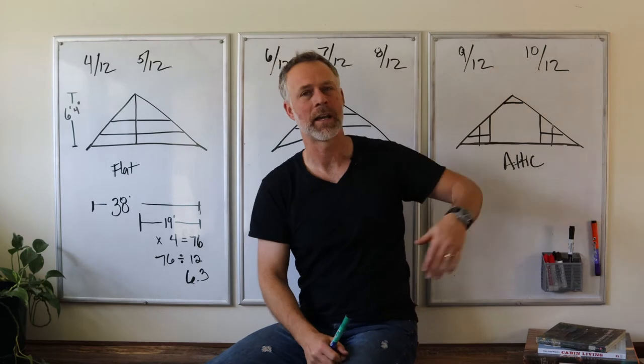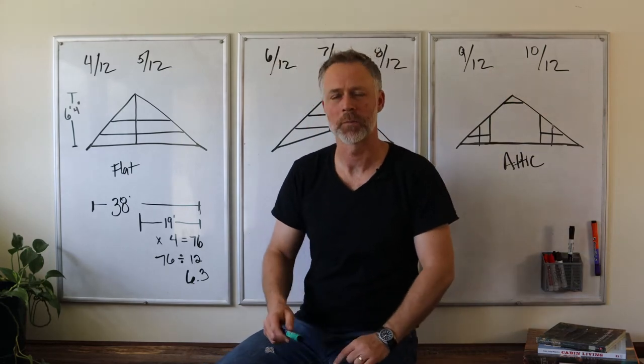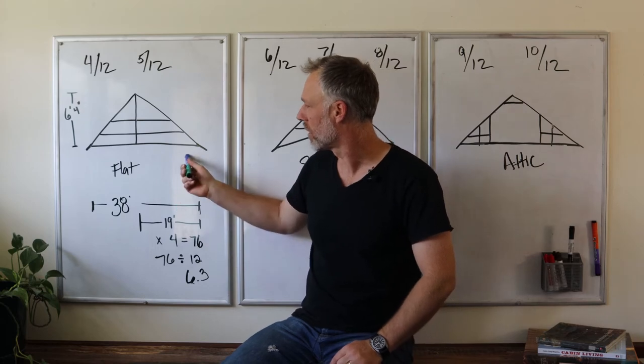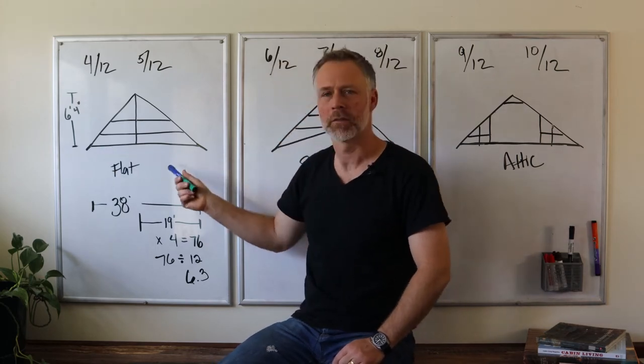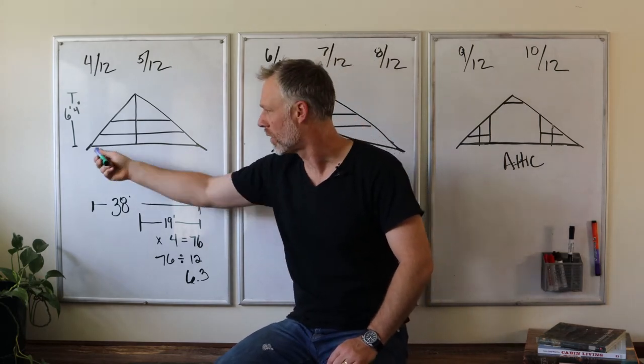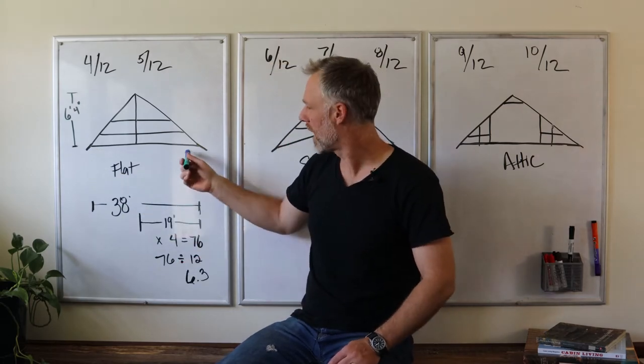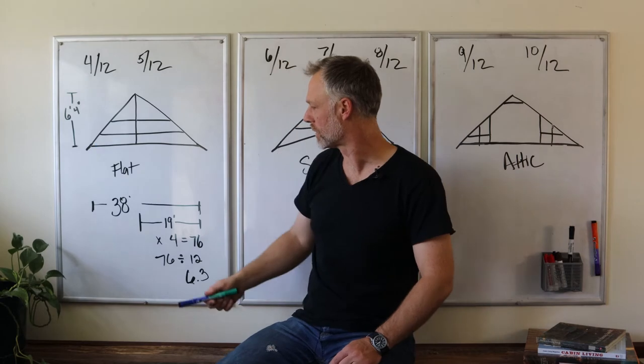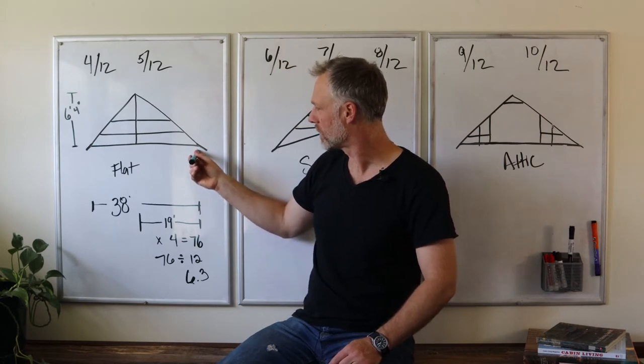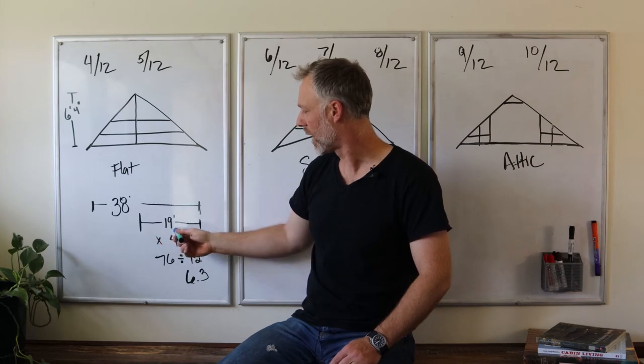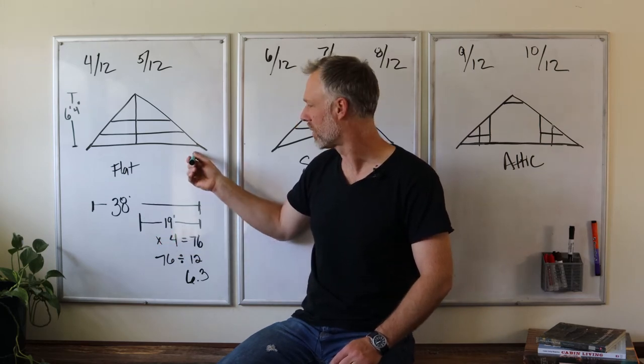When you get into really steep roof lines, you're talking about the 9 and the 10/12 pitch. Let me explain how that works. Imagine your truss spanning from the outside walls of your house is 38 feet. If you take that 38-foot truss and you go from the outside to the center, that's 38 divided by 2, and you're going to get 19 feet from the outside to the inside.